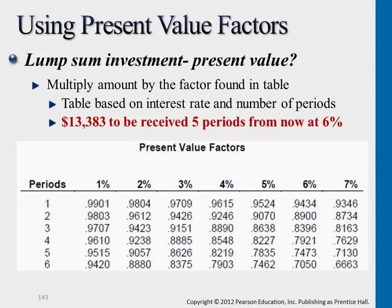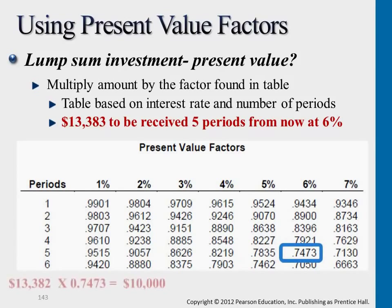So if we just rephrase that example: you expect to get $13,383 five years from now, and the account interest rate is 6%. So you would trace back that dollar amount, discounted by the present value factor, times the dollar amount that you're expecting to get certain years from now. So if you trace that back, discounted to the current date, the value will be $10,000.